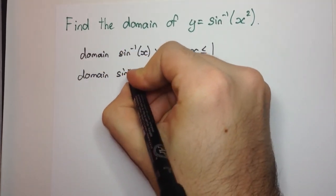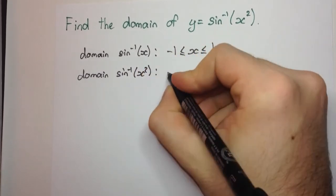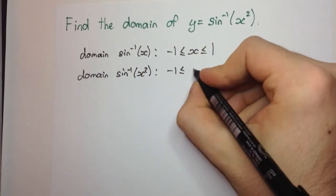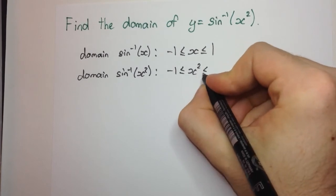So we're going to have minus 1 is less than or equal to x squared is less than or equal to 1.